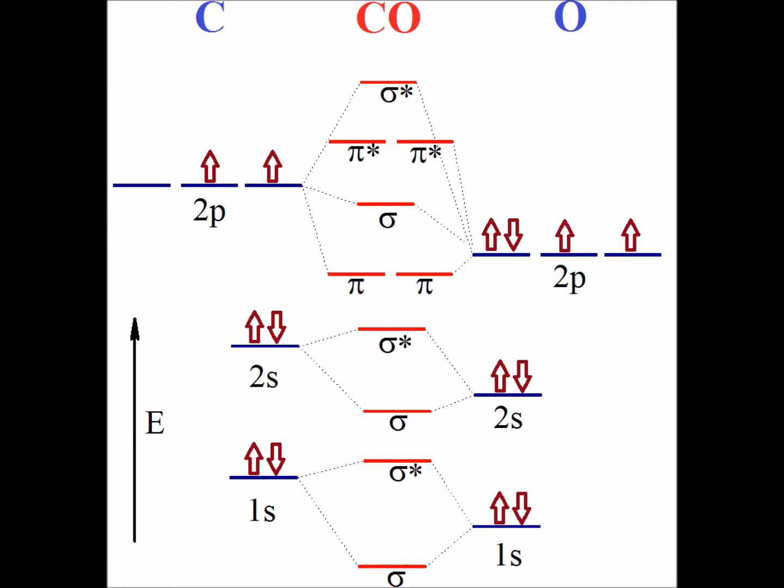Note that carbon has 6 electrons, oxygen has 8 electrons. Importantly, the electrons on oxygen for a given orbital, say the 1s, are at a lower energy than the 1s electrons from carbon. This is because oxygen has a greater nuclear charge than does carbon.